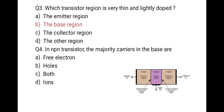The next question is: in an NPN transistor, the majority carriers in the base are — the figure shows the structure of an NPN transistor; the middle region is the base and it is P-type. P-type means trivalent impurity is added. When we add trivalent impurity, the majority carriers are holes. So the correct option is holes.